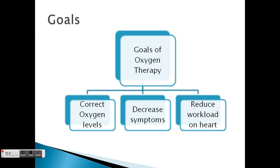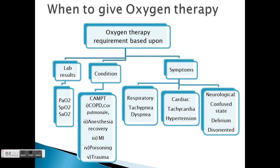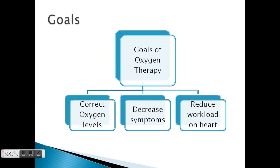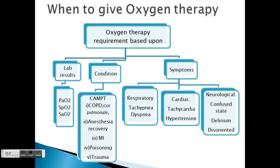The third goal is to reduce the workload of the heart. If hypoxemia is present, the heart tries to compensate by increasing the heart rate or increasing the force of contraction. When you give oxygen, the amount of oxygen in the blood increases, and thereby it helps reduce the workload on the heart, so the heart won't have to pump excessively to maintain oxygen supply to the body.